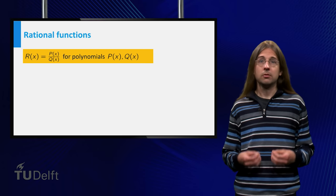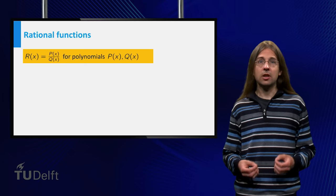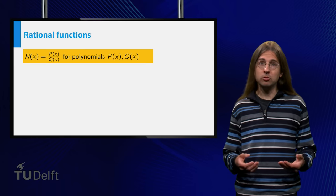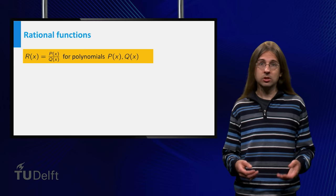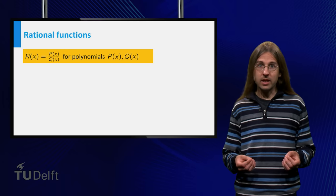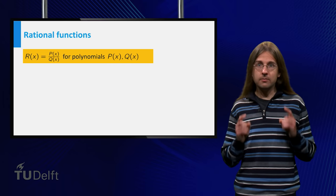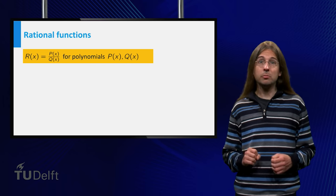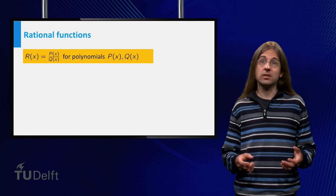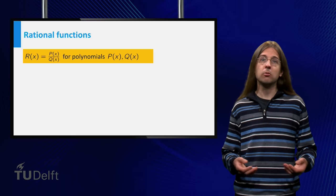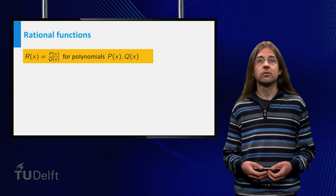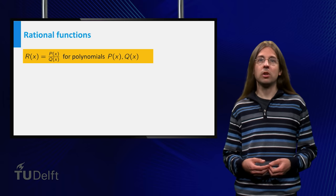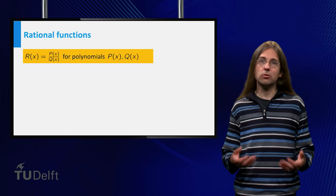In general, rational functions are precisely those functions you can make with a variable, numbers, addition, multiplication and division. These functions can all be written as a fraction p over q, where p and q are polynomials. Of course, q cannot be the polynomial which is always zero.